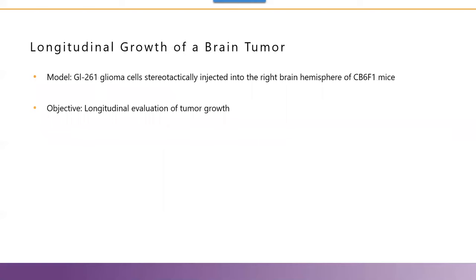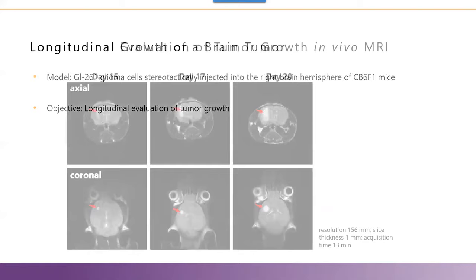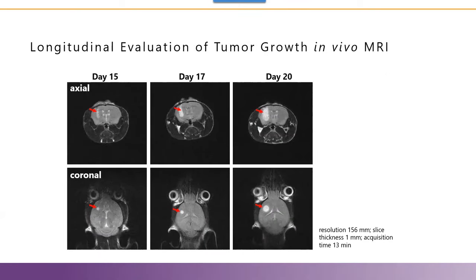Model for testing efficacy of an anti-cancer drug. In the present model, glioma cells were stereotactically injected into the right brain hemisphere of mice with the objective of longitudinal growth follow-up, ultimately serving for testing and comparing the efficacy of anti-cancer drugs. Longitudinal in vivo MR on days 15, 17, and 20 enabled demonstration of the time-related increase in the size of the tumor.